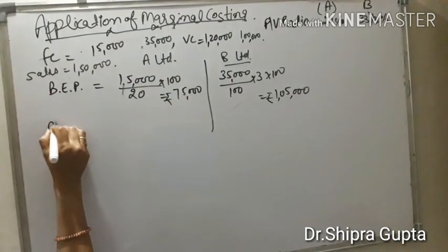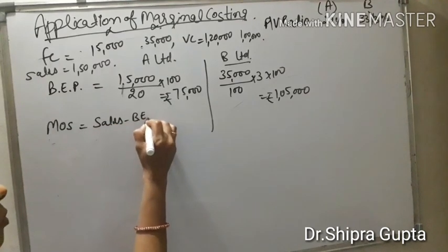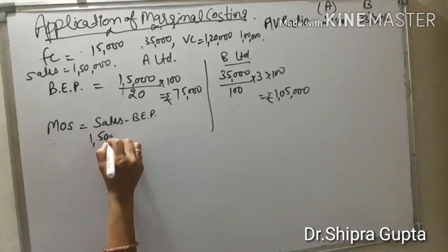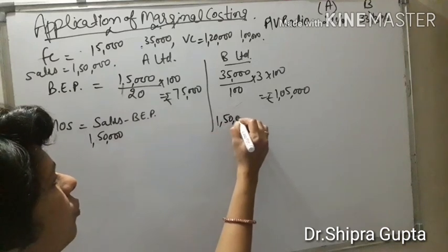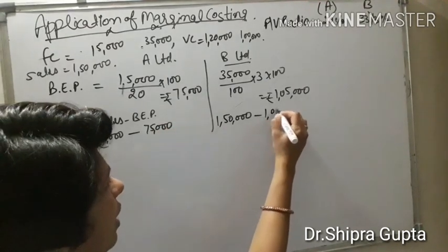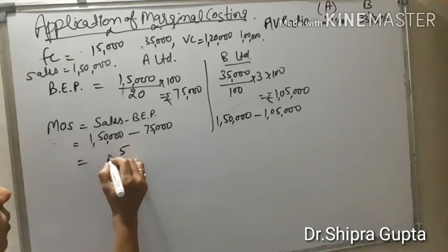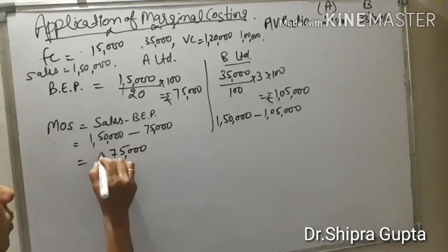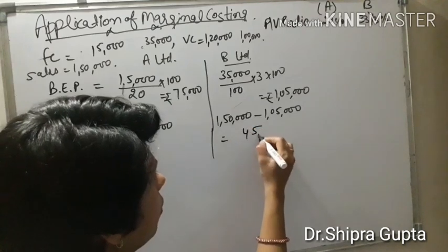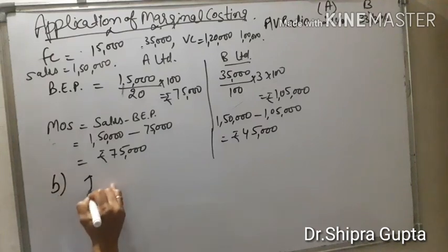Now we will calculate margin of safety. The margin of safety formula is sales minus breakeven point. For A Limited: sales 1,50,000 minus breakeven point 75,000, giving a margin of safety of 75,000 rupees. For B Limited: sales 1,50,000 minus breakeven point 1,05,000, giving a margin of safety of 45,000 rupees.